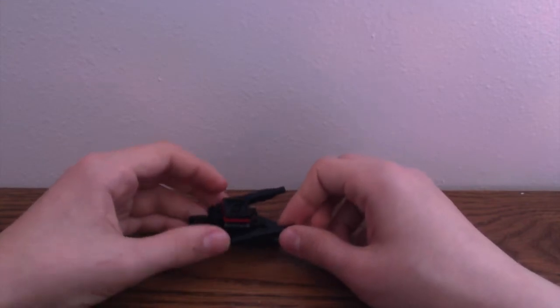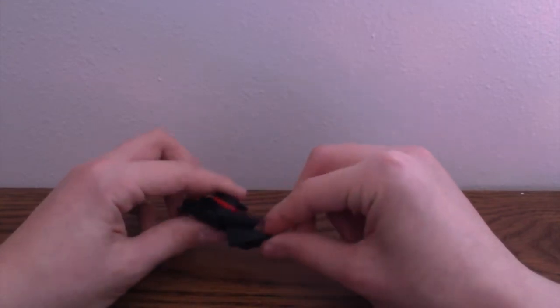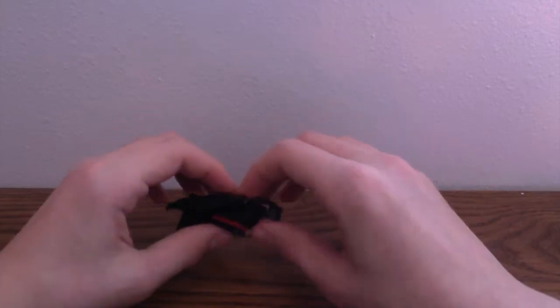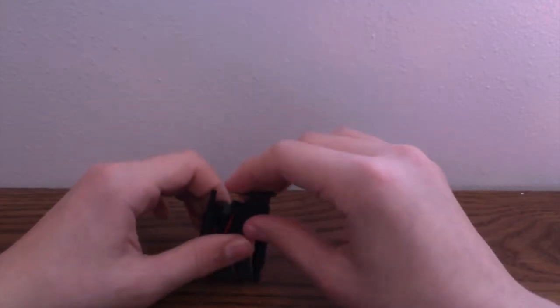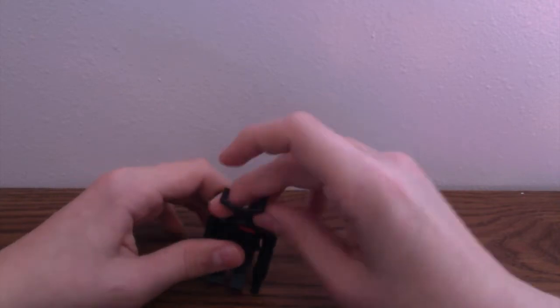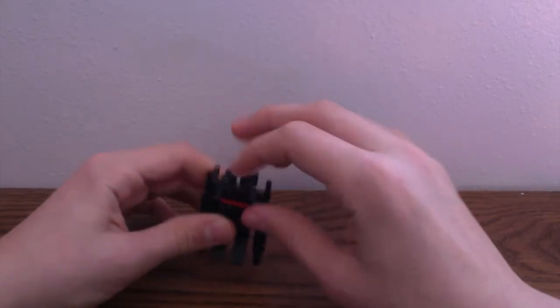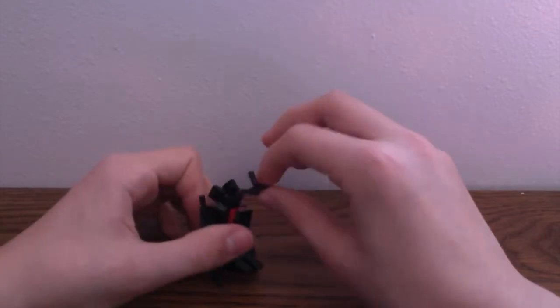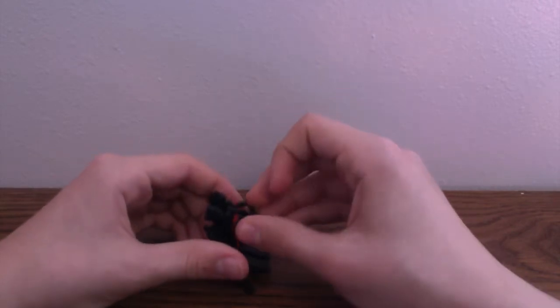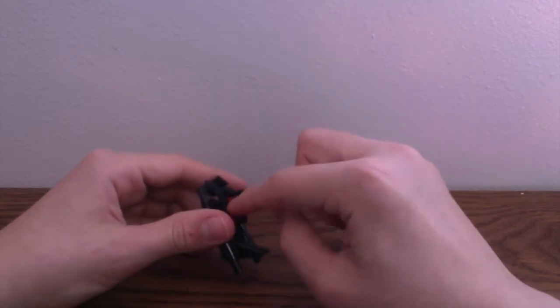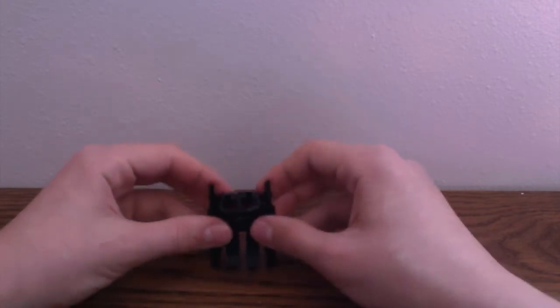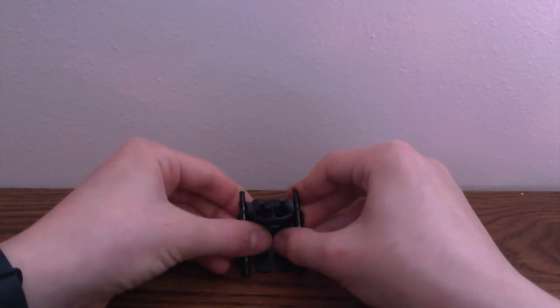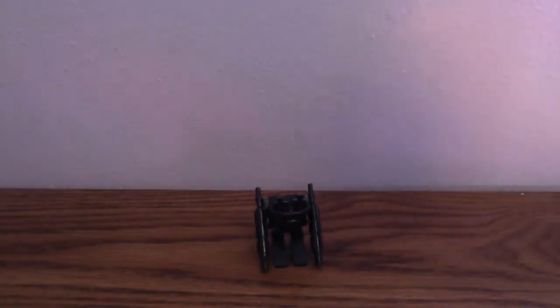So, to get him into robot mode, what you want to do is just bring the feet down. Bring these two pieces up first, and you want to bring these back. Bring this piece up, and then just rotate it so it's level with the 2x2 hinge. And then you can just bring these down. You can put the arms wherever you want, and here you have Bull in his robot mode.